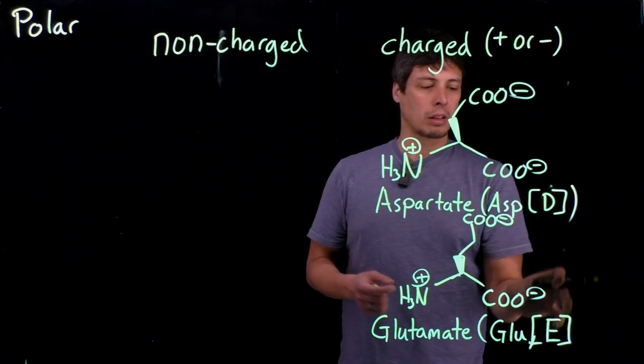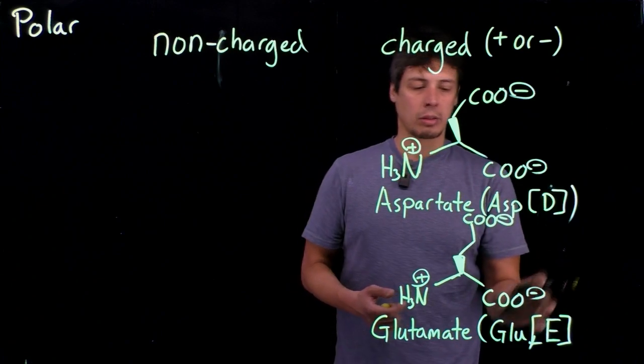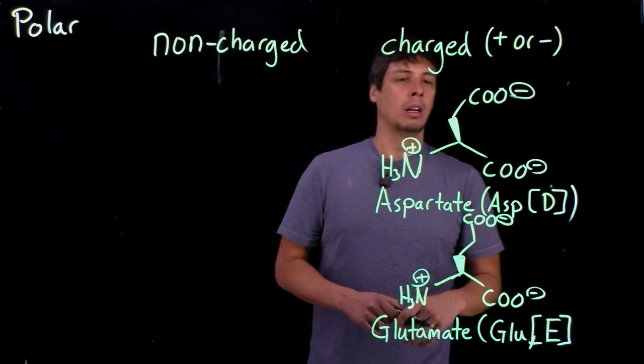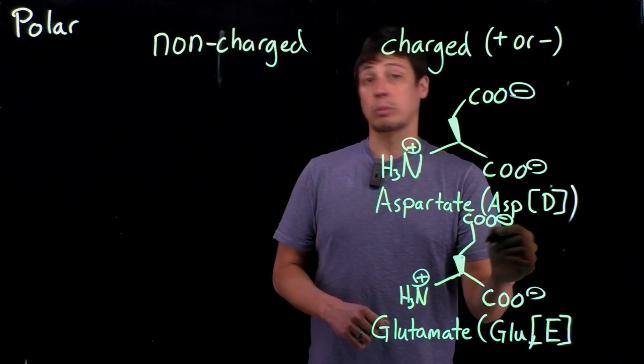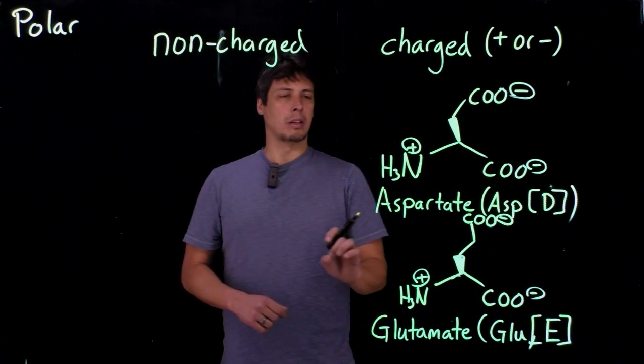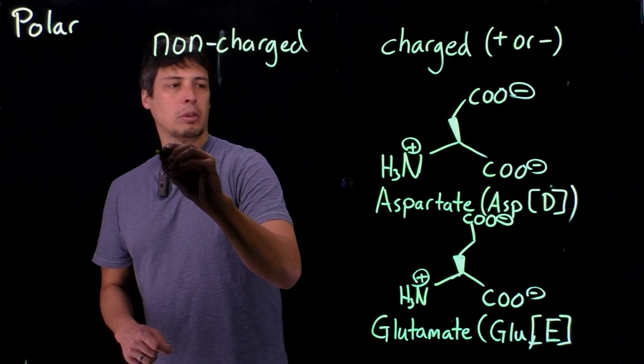And the way I remember this is that E comes after D, if you do by the one-letter codes, or you can even think glue comes after ASP alphabetically. And so this one has one more carbon. Okay, so these also have corresponding non-charged side chains. And so that's why I'm going to group them together.